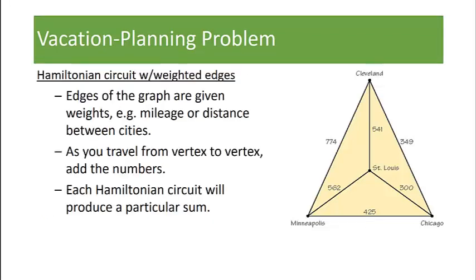What we want to find here is a Hamiltonian circuit on a graph with weighted edges. The edges of the graph are given a number, a weight. For example, we see that the edge from Minneapolis to Cleveland has been given a weight of 774. These weights can stand for mileage or distance between cities or the amount of time it takes.